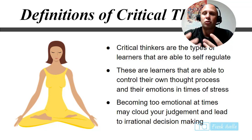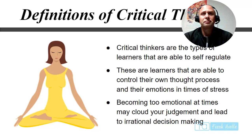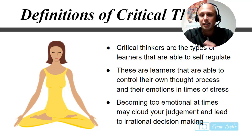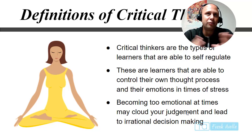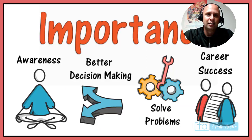Critical thinkers are also defined as self-regulatory learners — able to control their own thought process and emotions in times of stress. Controlling your emotions is very difficult. There's something called emotional intelligence. Becoming too emotional may cloud your judgment and lead to irrational decision-making. Most of the time when we make really bad decisions, it's because our emotions get the better of us.